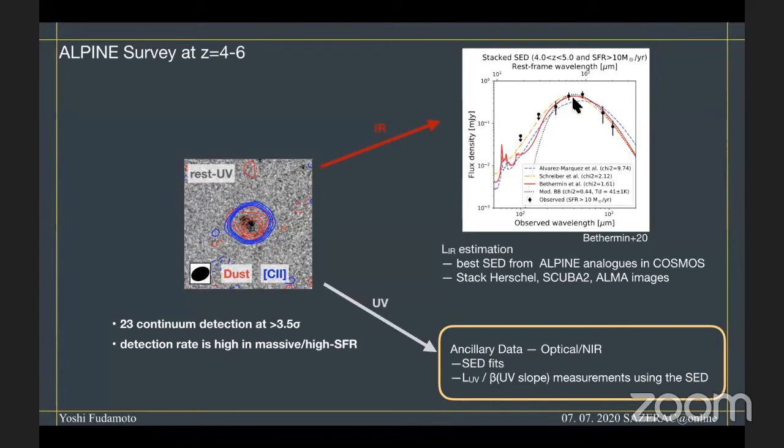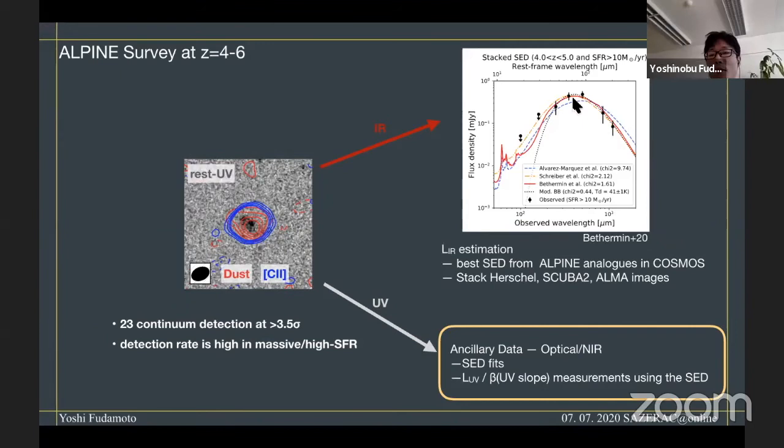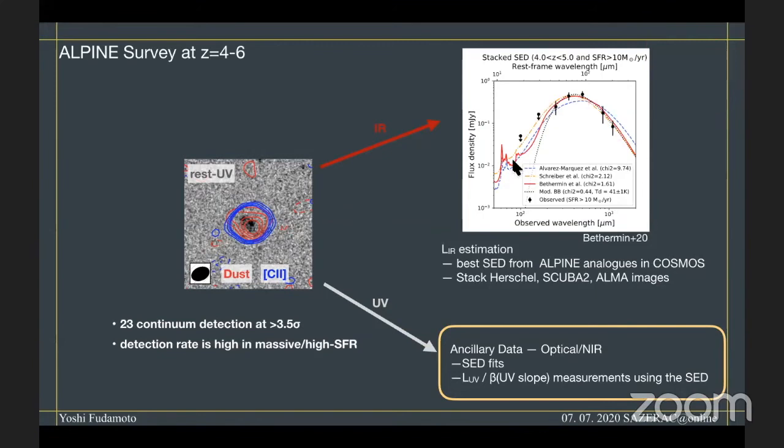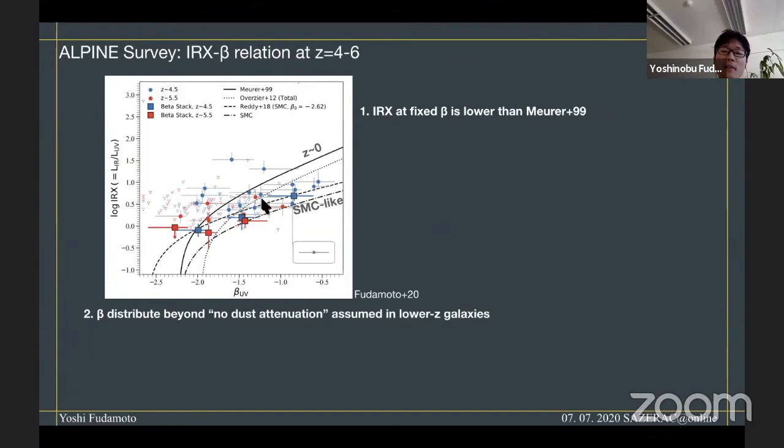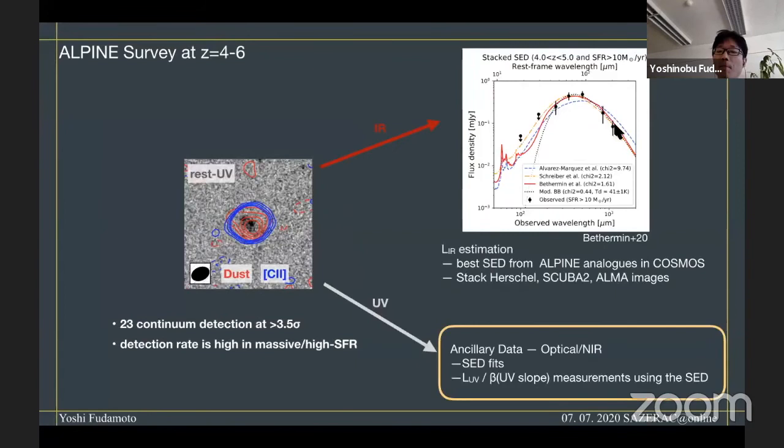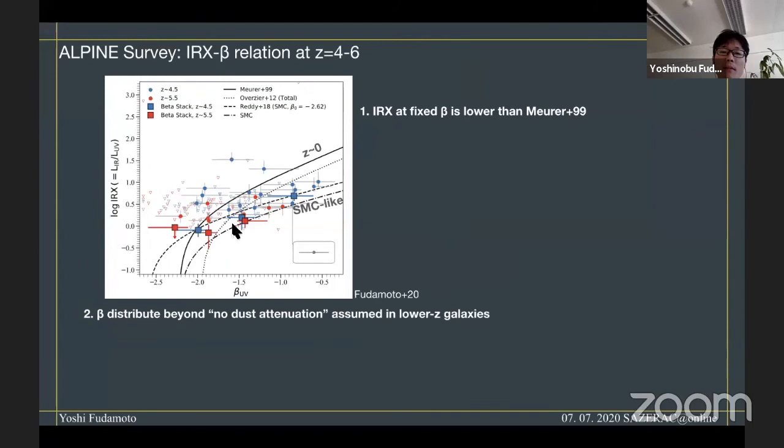We have another question from Laura. How do you compute the infrared star formation rate for single sources having only one continuum observation? Yeah, that's a very tricky point. In principle, we don't know the individual shape of far-infrared SED, so we are pretty much relying on this average infrared luminosity or average infrared SED. So individual samples could scatter because of these differences of far-infrared SED, but on the ensemble average, we should be safe. So these stacks should be consistent with this average SED. We are pretty much relying on this average data points.